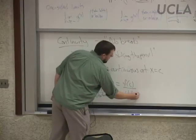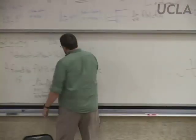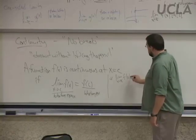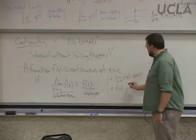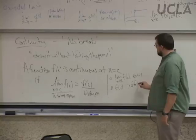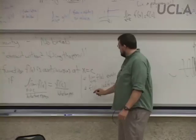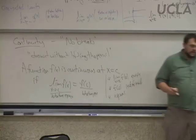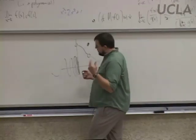There are really three things that have to happen for continuity at a point. One: the limit has to exist. Two: the function has to be defined at that point — it's not an undefined point. Three: the limit and the function value must be equal. Continuity at a point requires all three of those conditions.